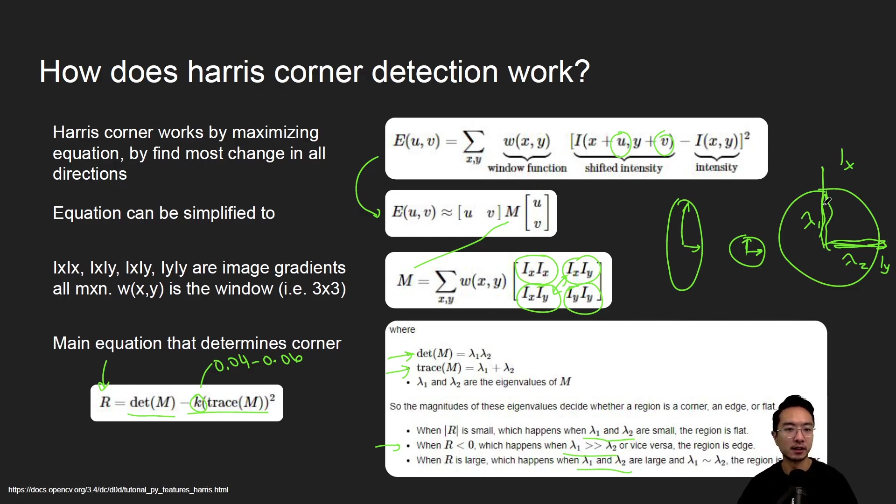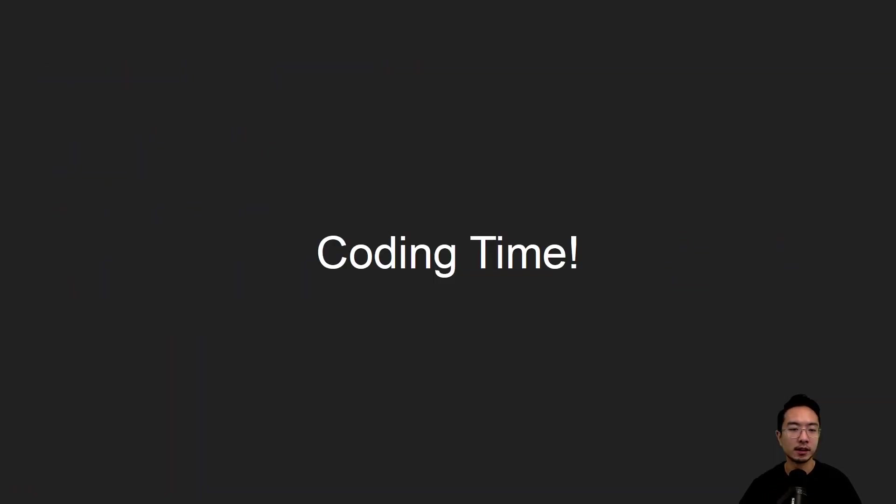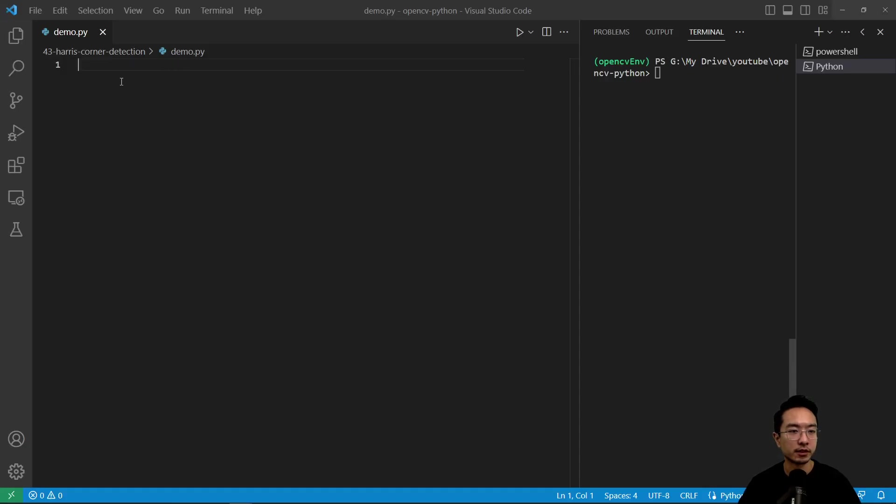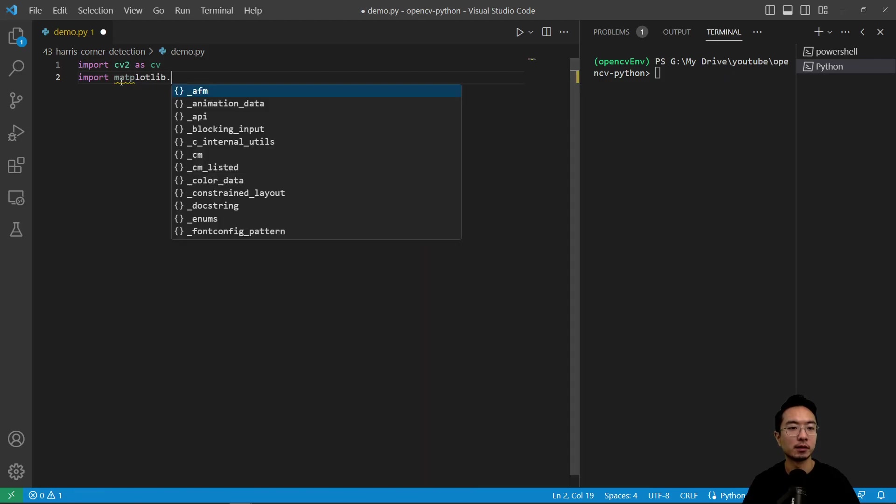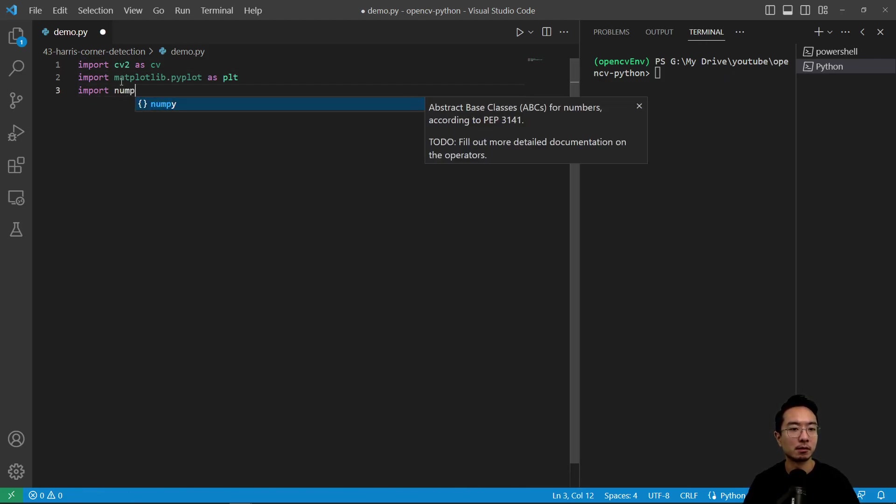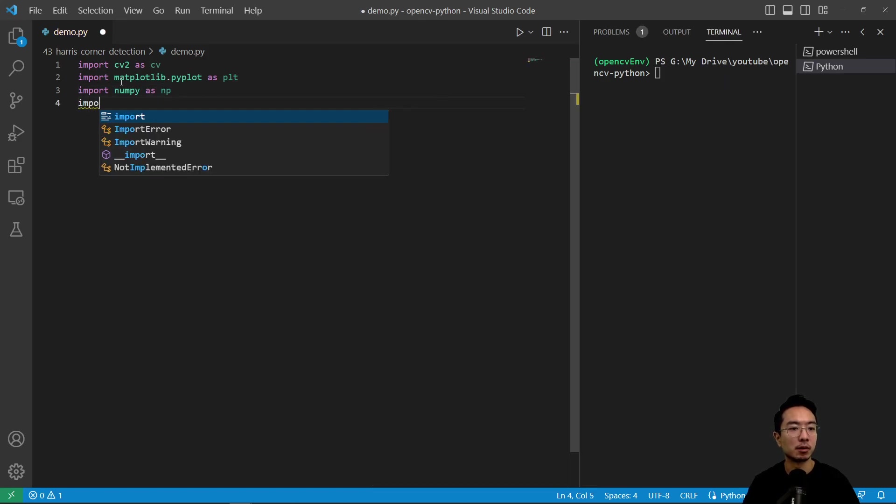So that's the general idea of the Harris corner. And we'll now see how it works in code. As usual, let's go ahead and import some of the modules that we will be using. Import cv2 as cv, import matplotlib.pyplot as plt, import numpy as np, and then import os.